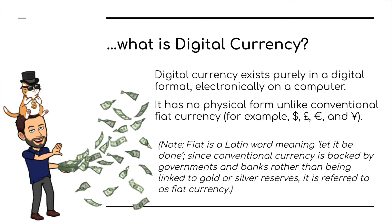Digital currency exists purely in a digital format — purely electronic, figures on a spreadsheet and database on a computer network. It's not pound notes in a bank vault; it's just numbers on a spreadsheet. It has no physical form, unlike conventional fiat currency. Fiat refers to things like euros, dollars, sterling, pound notes, Japanese yen — things you can put in your pocket. You can't put digital currency in your pocket. Fiat is a Latin word meaning 'let it be done,' since conventional currency is backed by governments and banks rather than gold or silver reserves.